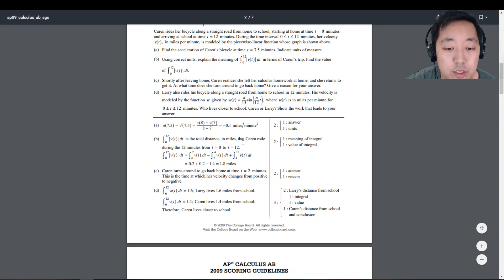Minus 0.1 miles per minute squared. That's correct. Total distance in miles at Cairn Road during the 12 minutes, 1.8 miles. Goes back home. Because their velocity changed from positive to negative at t equals 2 minutes. That's good. Larry lives 1.6 miles. Karen lives 1.4 miles. Therefore Karen lives closer to school.